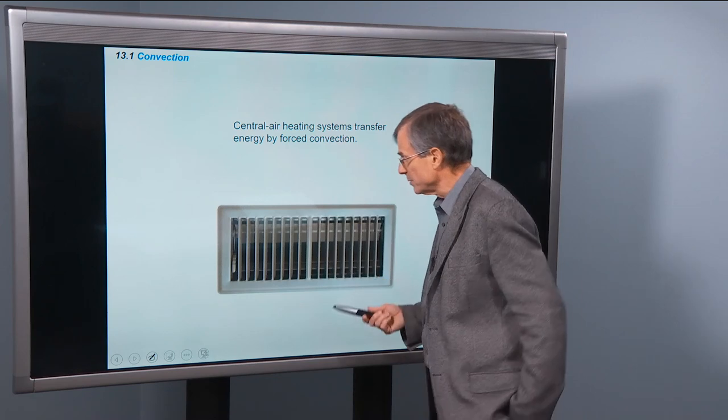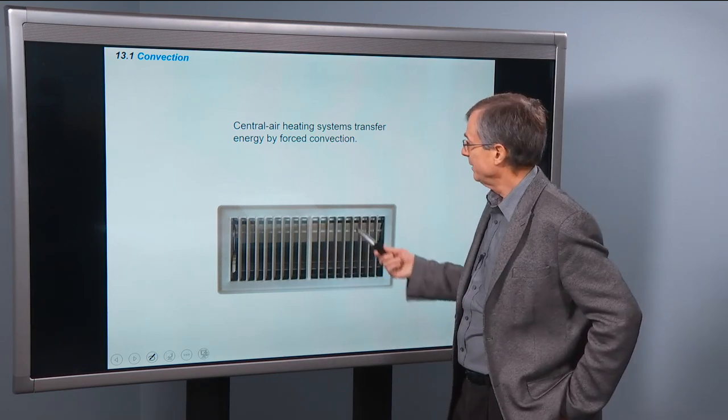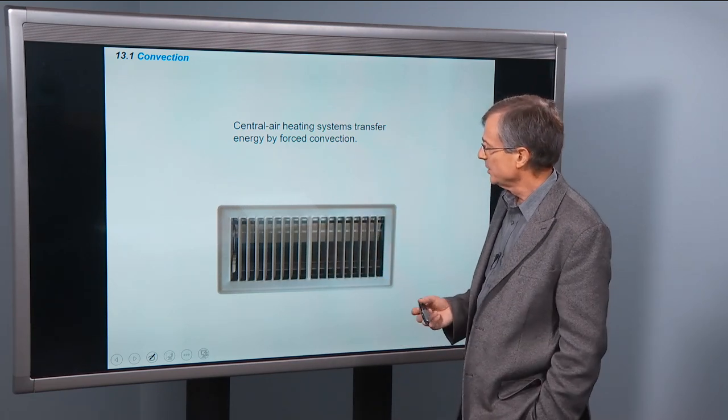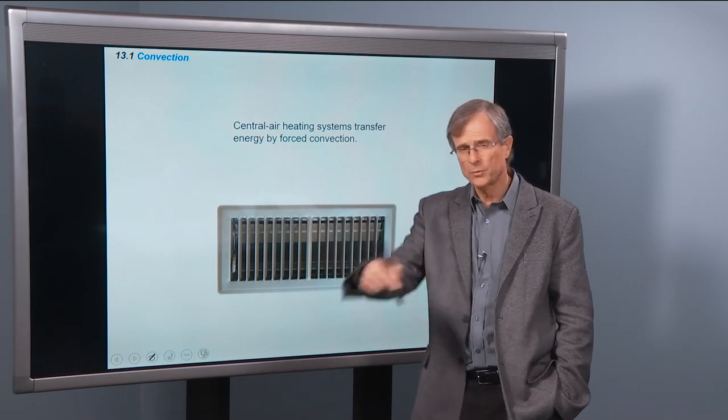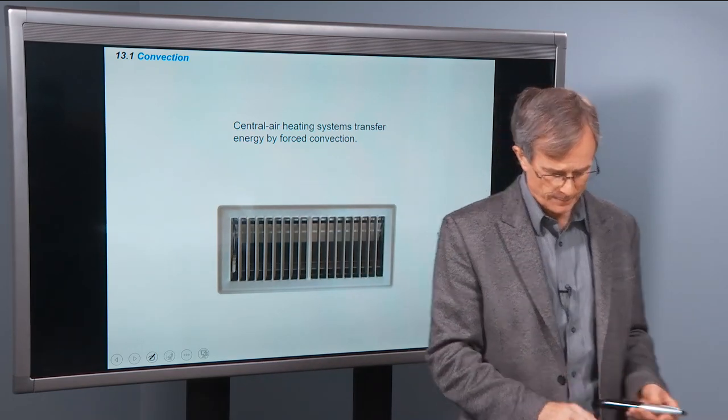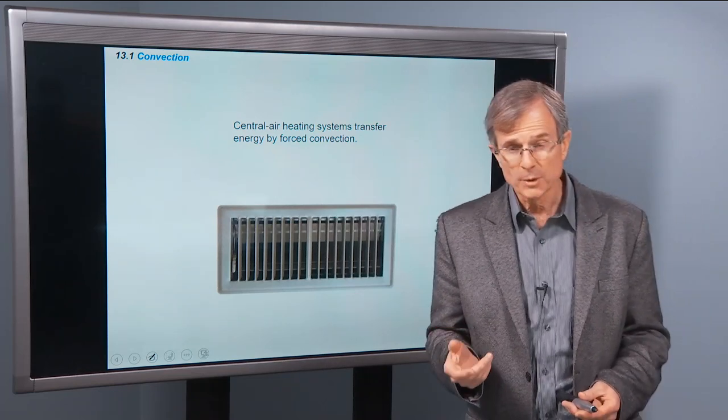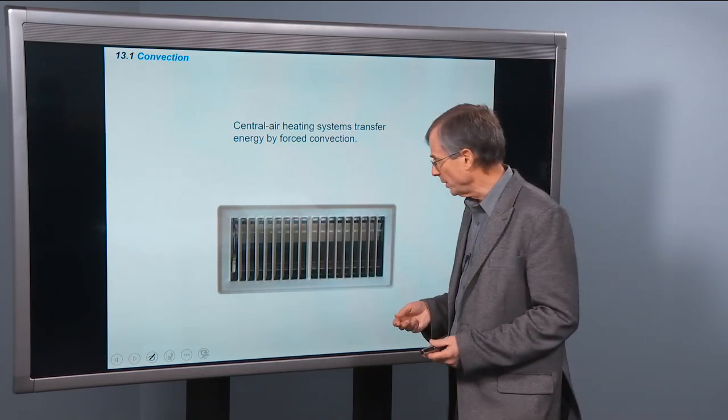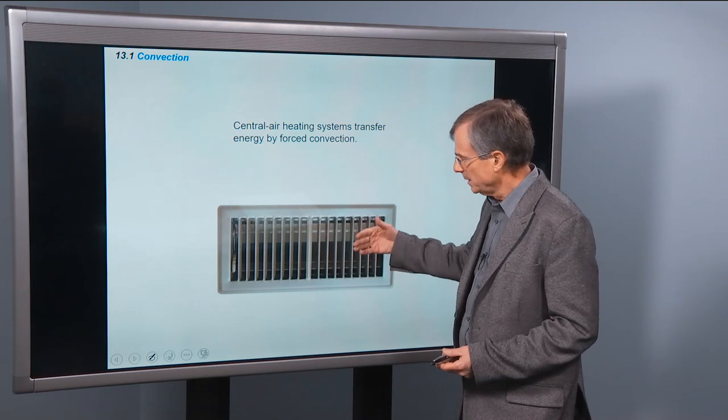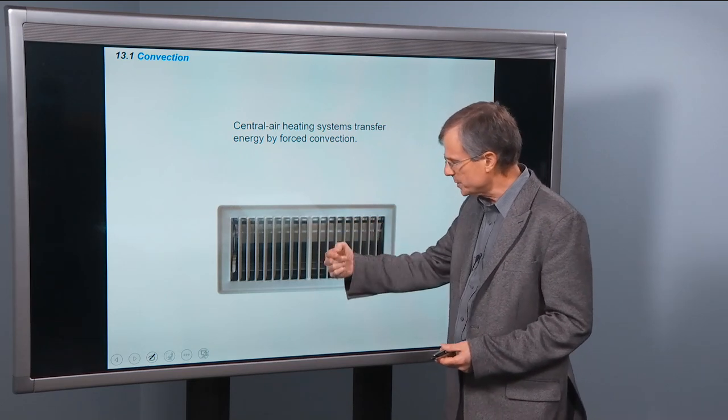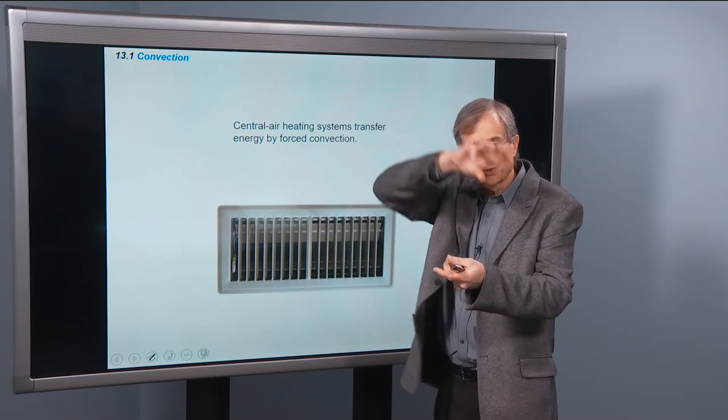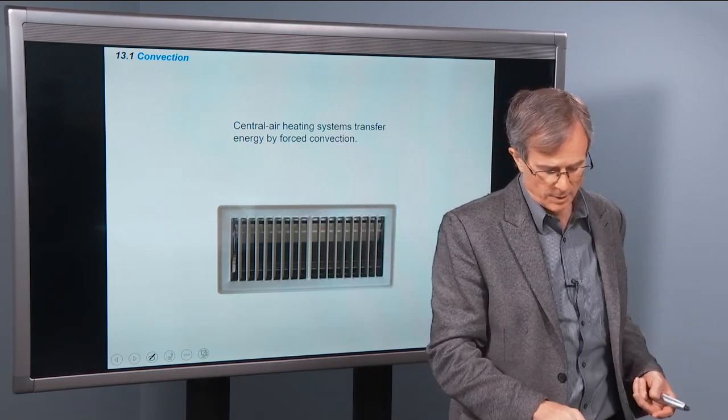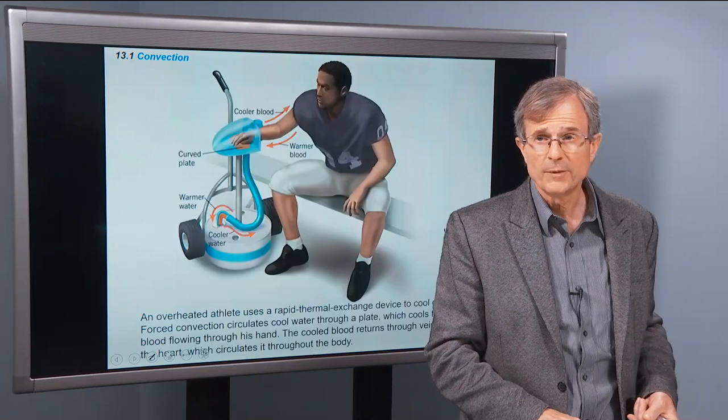Central air systems, most of our homes have a central air heating system, transfers of energy by forced convection. You've got a fan, it's pushing it through the pipes. Then there's some natural convection that occurs inside of the room, though. Once it's in the room, this hot air is forced into the room. Well, it's going to be hot, and it's going to rise. And so you're hoping for some natural convection to supplement the forced convection.